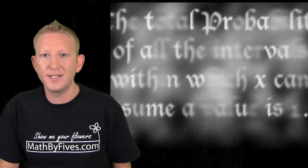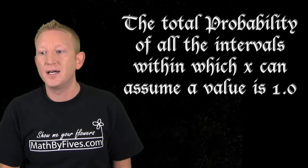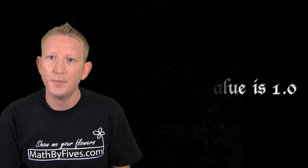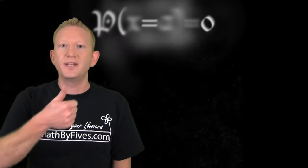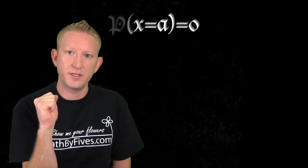Next, each one of the probabilities of an interval is in between 0 and 1 because it's a probability. But moreover, the probability of a single event happening is 0 because it has no measure.